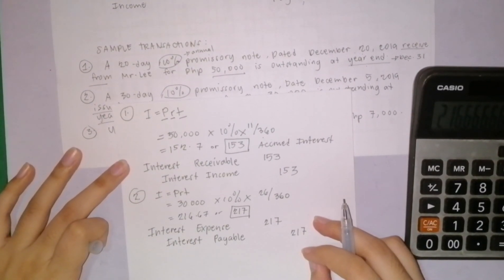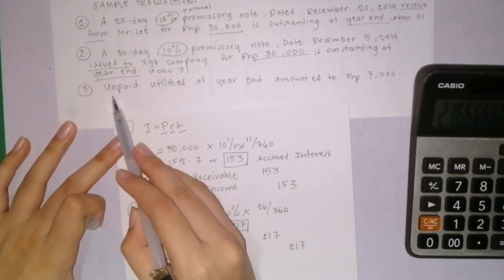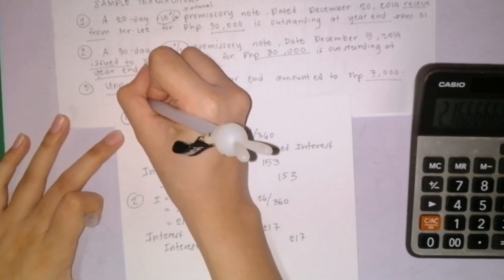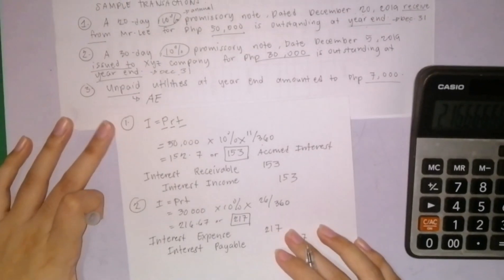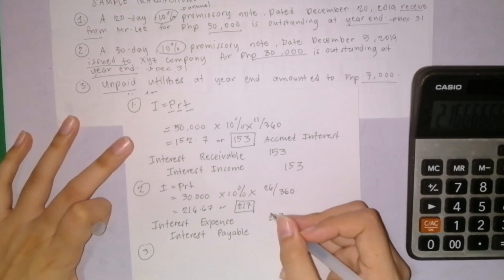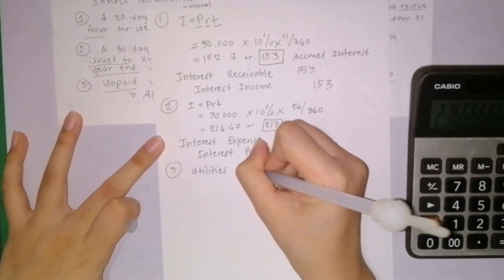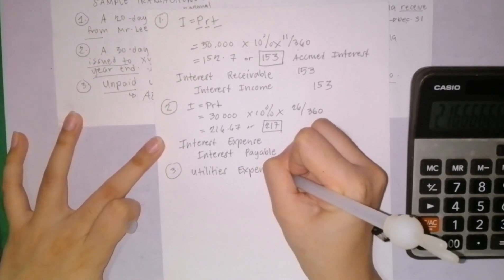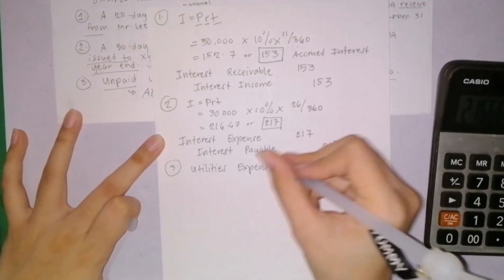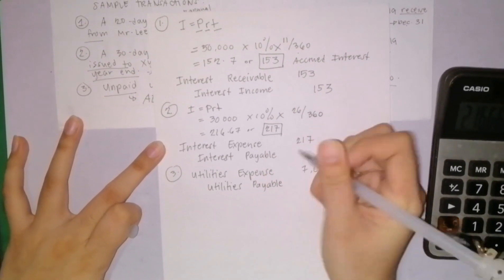Last problem for accruals, problem number 3. Unpaid utilities at year-end amounted to 7,000. Unpaid utilities we haven't paid yet. This is an example of accrued expense. Since unpaid utilities is already given, we don't need to compute. The entry to record: we debit utilities expense of 7,000 and credit utilities payable amounting to 7,000 as well.